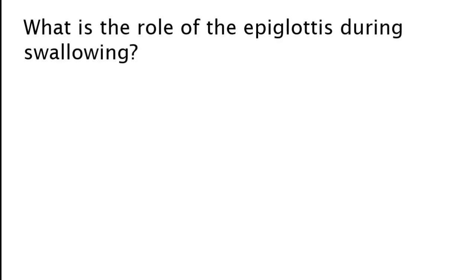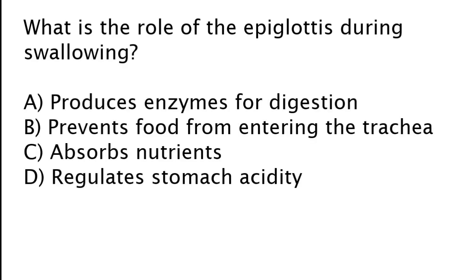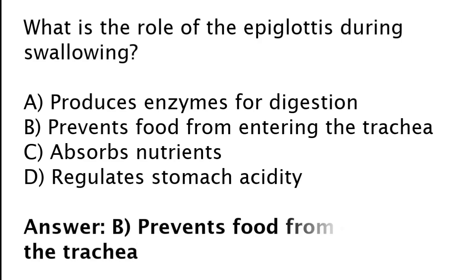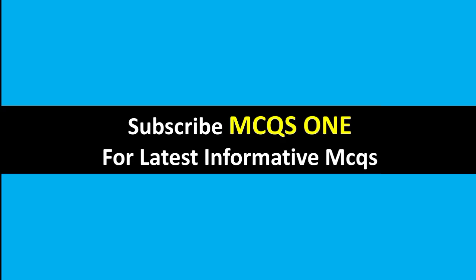What is the role of the epiglottis during swallowing? Produce enzymes for digestion, prevent food from entering the trachea, absorb nutrients, or regulate stomach acidity? The correct answer is option B. The role of the epiglottis during swallowing is to prevent food from entering the trachea. Thanks for watching. Subscribe to MCQs 1 for the latest informative MCQs.